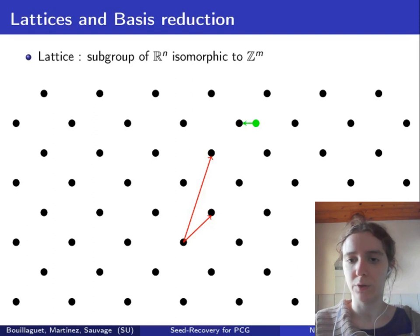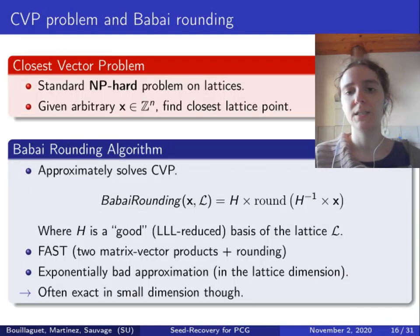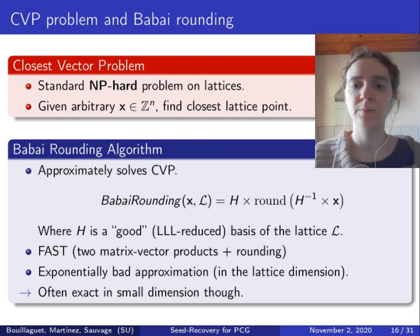The lattice problem we are interested in is the CVP, the closest vector problem. Given a green point, we search in the lattice the closest point to the green one. This is a hard problem because it's NP-hard. Hence, we're not going to solve the CVP exactly. We're going to use an algorithm that approximately solves the CVP.